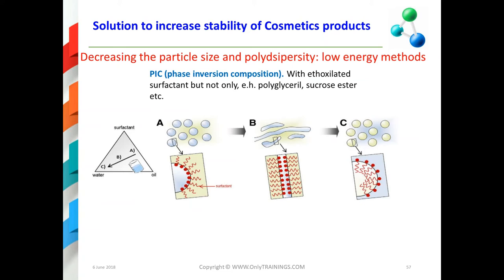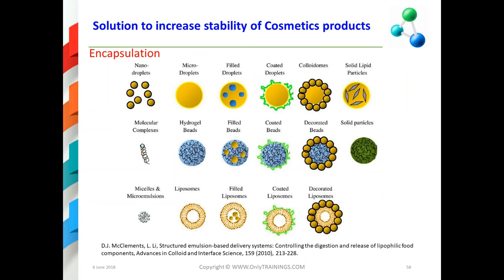Another low-energy method that is not restricted to ethoxylated surfactants, but in which you can also use greener surfactants such as polyglycerol or sucrose esters, is the phase inversion composition. In this method, you start from the surfactants with oil mixtures and add water to these mixtures. During the dilution pathway, you will pass through microemulsions and take advantage of these ultra-low interfacial tensions to form very small droplet-sized emulsions, such as nano emulsions. So you can obtain very stable emulsions by this method.